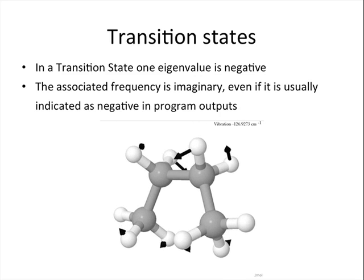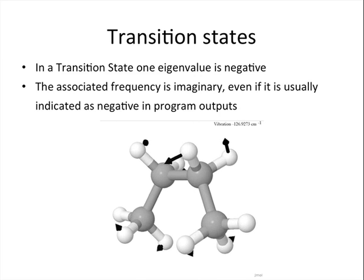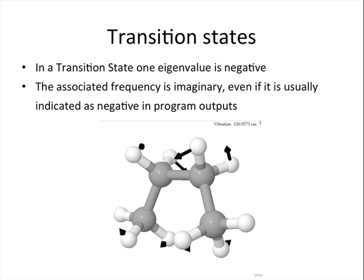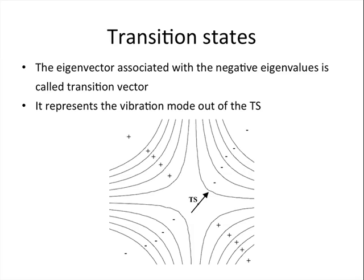Here, we see the butane and the transition state for its rotation around the central bond. The eigenvector associated with this negative eigenvalue is called the transition vector, and this represents the vibration mode out of the transition state itself.